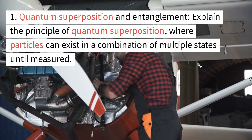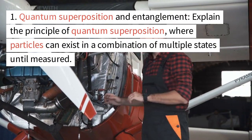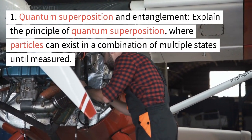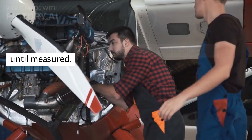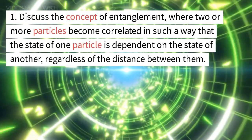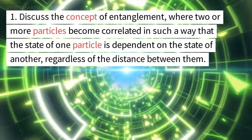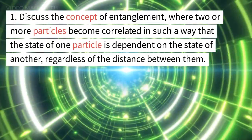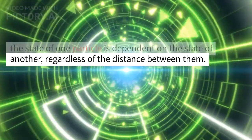Quantum Superposition and Entanglement. Explain the principle of quantum superposition, where particles can exist in a combination of multiple states until measured. Discuss the concept of entanglement, where two or more particles become correlated in such a way that the state of one particle is dependent on the state of another, regardless of the distance between them.